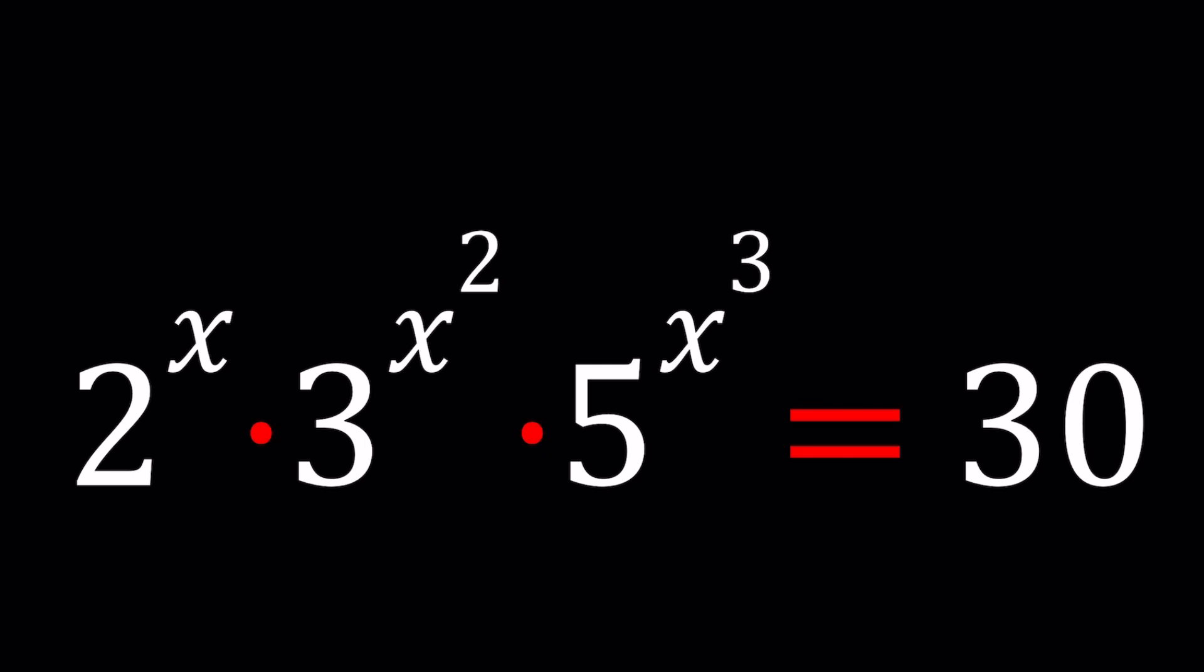Do you see the obvious solution? If not, that's okay. It is x equals 1. Why? Because 2 times 3 times 5 is 30. So x equals 1 is a solution.